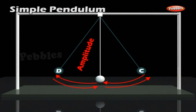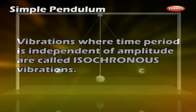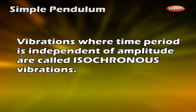It shall be observed that the amplitude of vibration will go on decreasing, but the time period remains the same. Vibrations where the time period is independent of amplitude are called isochronous vibrations.